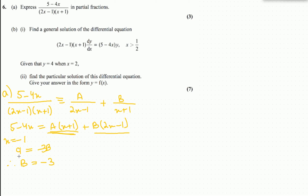Now to find a, we make the 2x minus 1 term zero by setting x equals one half. When x equals one half, 5 minus 4 times one half equals 3. This equals a times one half plus 1, which is 3 over 2 times a. Therefore a equals 2.